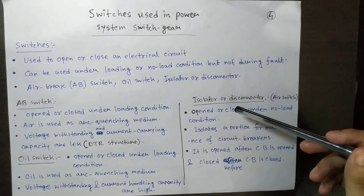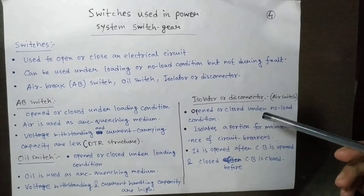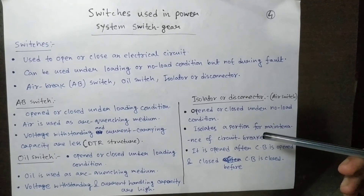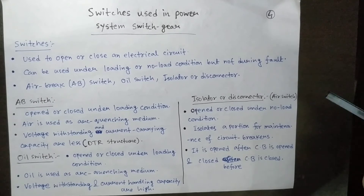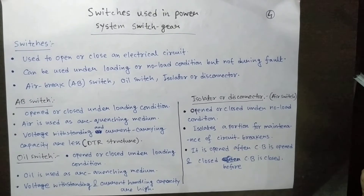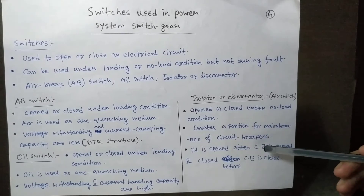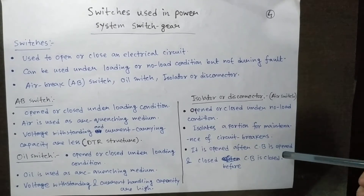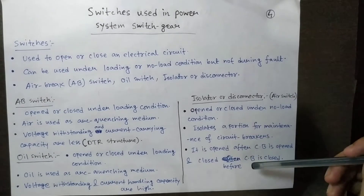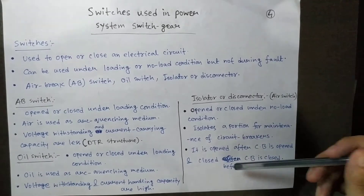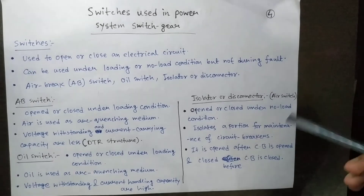Always remember that the isolator does not have arc quenching capacity. If you try to operate it under load, it may burn or get damaged. The AV switch has arc horns that quench the arc, but the isolator does not. The correct procedure is: for maintenance, first open the circuit breaker, then open the isolator. Similarly, before closing, first close the circuit breaker, then close the isolator. This sequence is always followed.